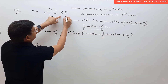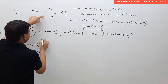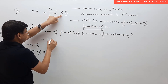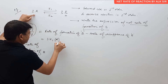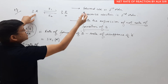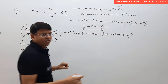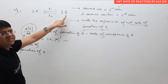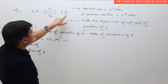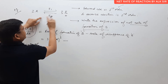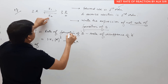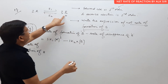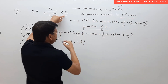Rate of formation of B is occurring in the forward direction. So the rate of formation of B equals 3K1 into concentration of reactant A to the power 1, since the forward reaction is first order. Then minus the rate of disappearance of B, which is occurring in the backward direction. The rate of disappearance of B equals 3K2 into concentration of B — because for the backward reaction B is the reactant — to the power 2, since the reverse reaction is second order.